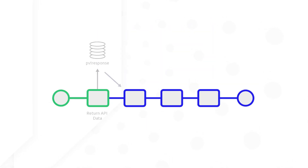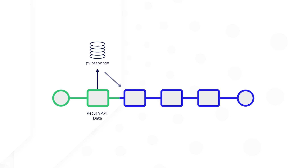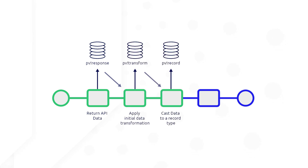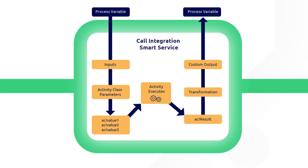Here we have a process using three script tasks to retrieve the API response, transform the data, then cast the data to a record type. Instead of using three script tasks with three process variables,